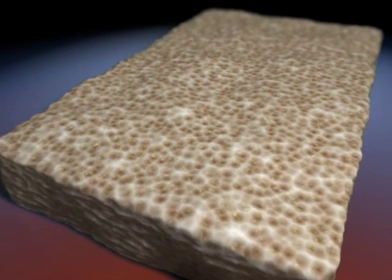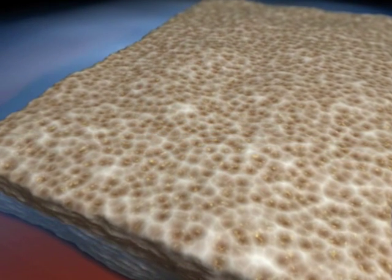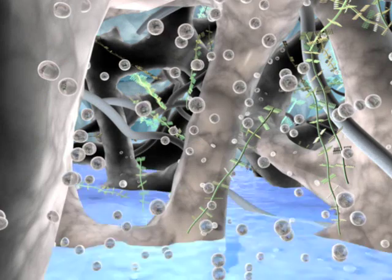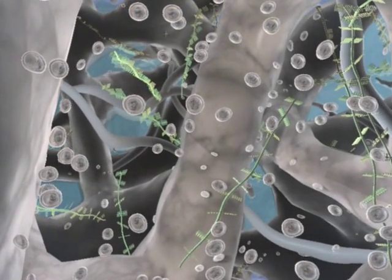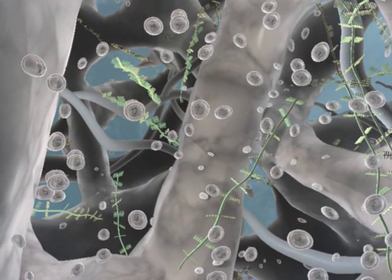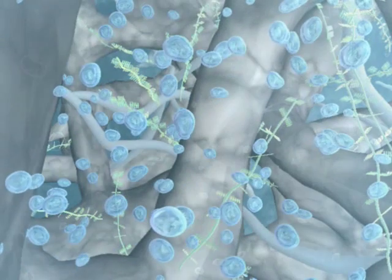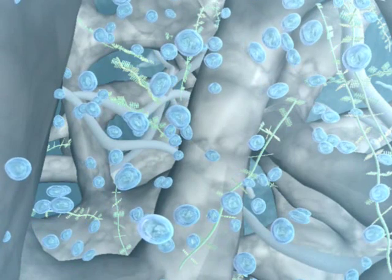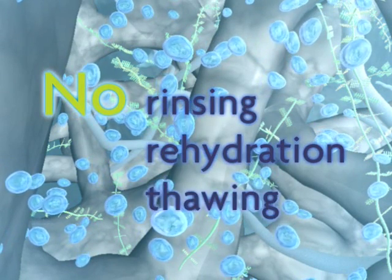Isotonic saline rinses out cellular components and removes the decellularization reagents. The allograft is bathed in a LifeNet Health proprietary USP glycerol solution. This preservation agent is a naturally occurring molecule and acts as a water replacement agent enabling convenient room temperature storage, allowing the product to be used immediately without rinsing, rehydration, or thawing.